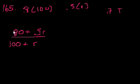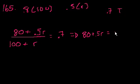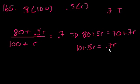The problem tells us that this ratio, the total percentage, all the games they won divided by all the games they played, equals 0.7 or 70%. If we multiply both sides by 100 plus r, we get 80 plus 0.5r equals 0.7 times 100, which equals 70 plus 0.7r. Subtract 70 from both sides: 10 plus 0.5r equals 0.7r. Subtract 0.5r from both sides: 10 equals 0.2r.